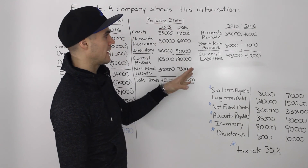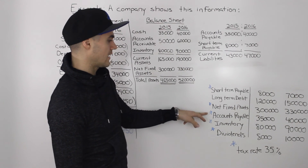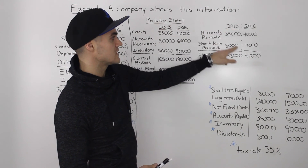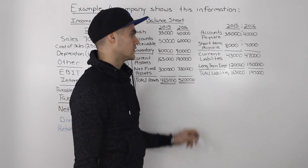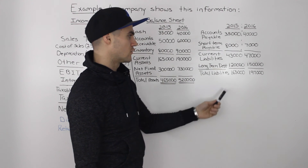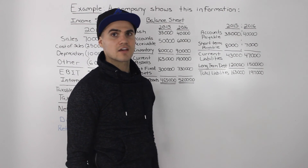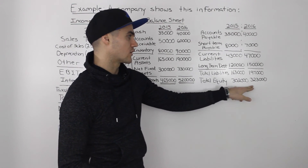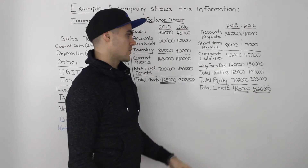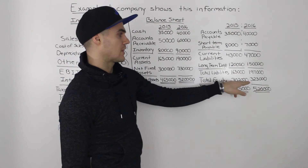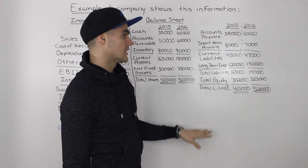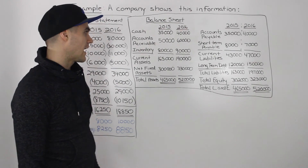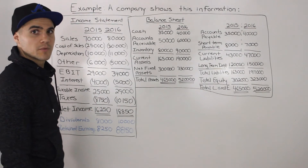Next, we organize the liability section. Starting with current liabilities — accounts payable and short-term payables — we get $43,000 for 2015 and $47,000 for 2016. Adding long-term debt, we get total liabilities of $163,000 and $197,000 respectively. Once we have total assets and total liabilities, we subtract to get total equity for each year to balance both sides: $302,000 in 2015 and $323,000 in 2016. Adding liabilities and equity balances out with total assets on the left side, so we now have our income statement and balance sheet organized.